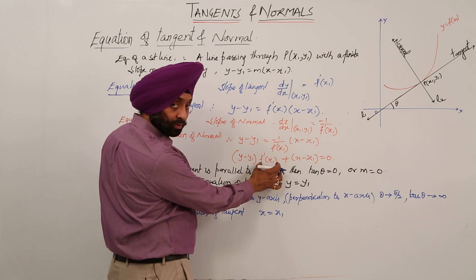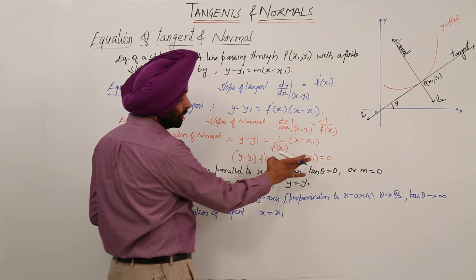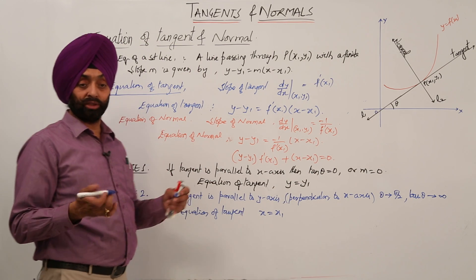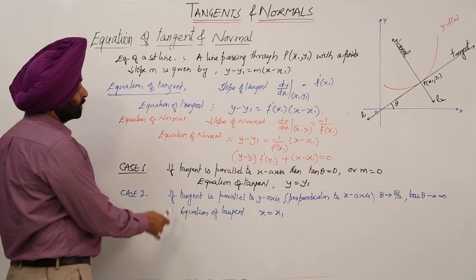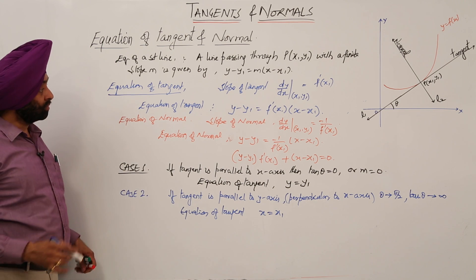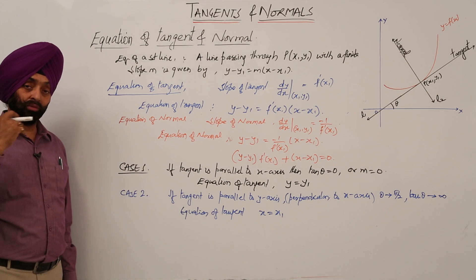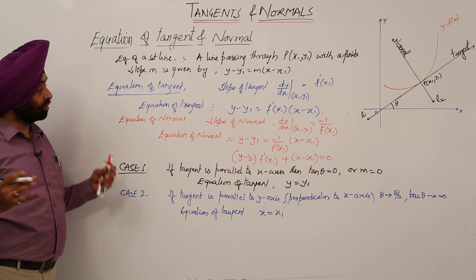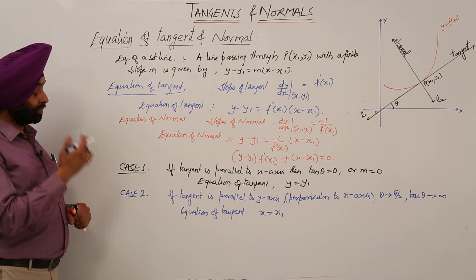Then the equation of tangent is X equals X1. Here this will become zero, so this whole thing is zero: X minus X1 equals zero, X equals X1. These are some basic things which we should be learning or practicing. Now we will be doing some examples based on all these things.